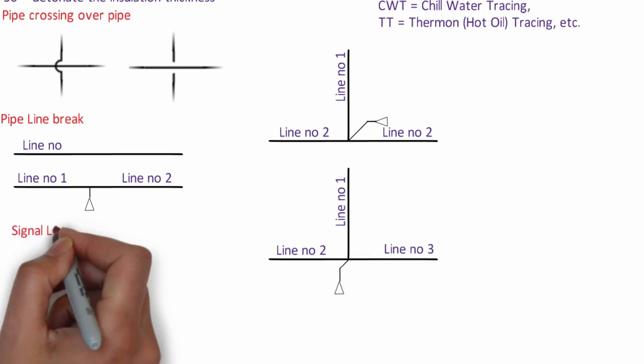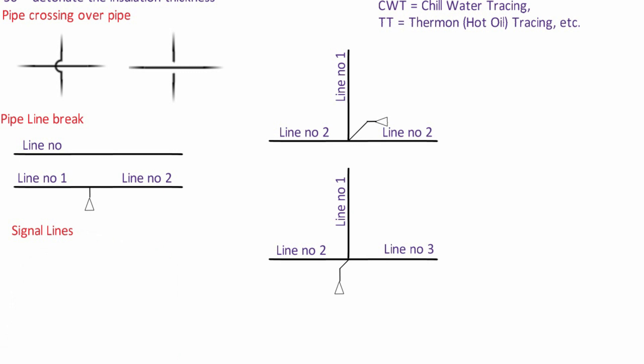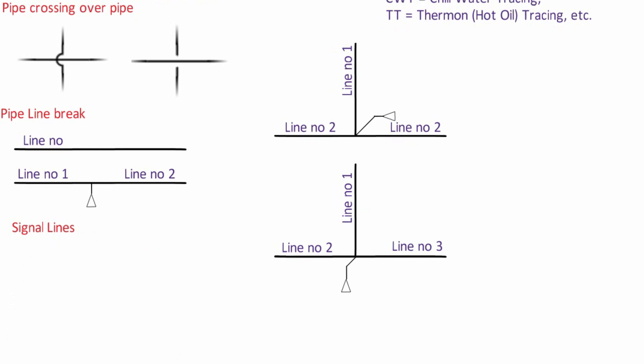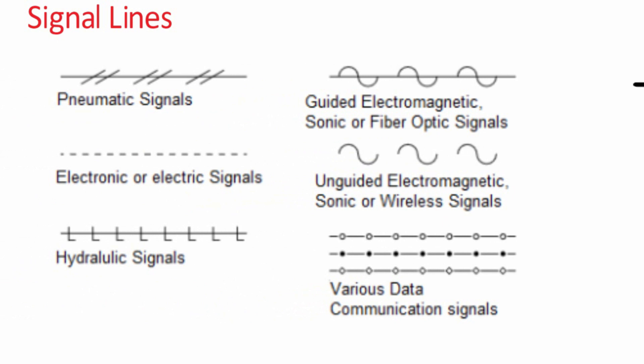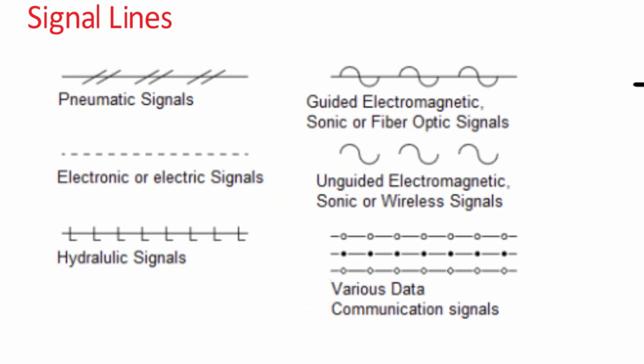Process lines are bolder than other lines such as those that represent electric, pneumatic or data signals. Process control systems use various types of signals to communicate information between components, instruments and the control system computers. Each type of signal has its own line type to explicitly identify the type of signal that travels along it. Like pneumatic signals, guided electromagnetic sonic or fiber optic signals, electronic or electric signals, unguided electromagnetic sonic or wireless signal, hydraulic signal, and various data communication signals.